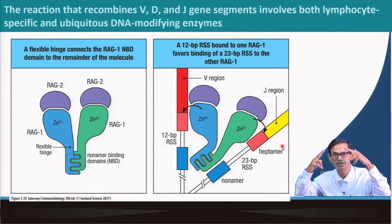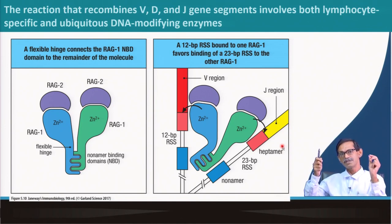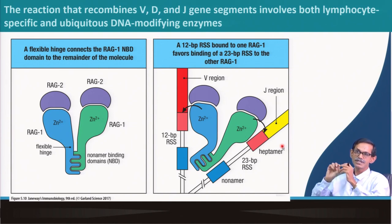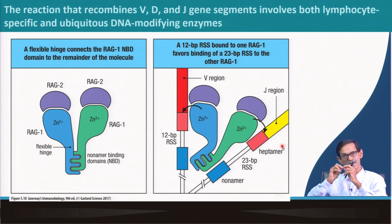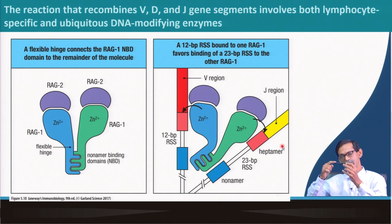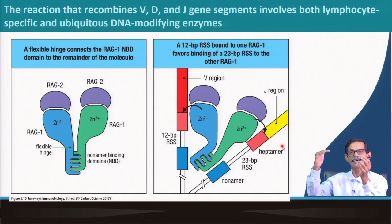TDT — Terminal Deoxynucleotidyl Transferase — is a very important enzyme. It can add nucleotides to the 3-prime end of DNA in a template-independent manner. Normally, DNA polymerase needs a template: if there is an A it adds a T, if there is a G it adds a C — that is how DNA synthesis works.